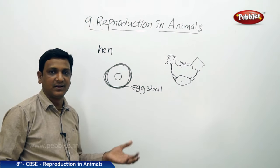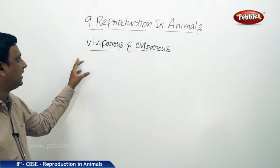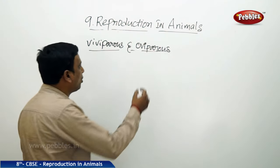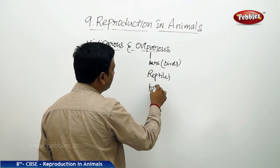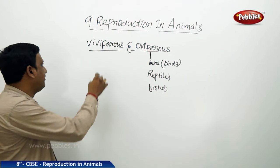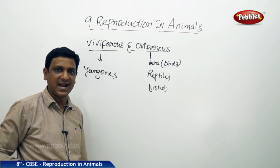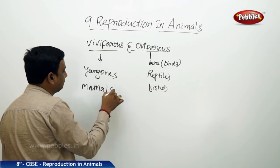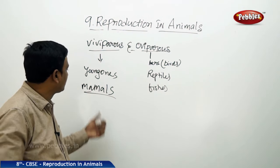We can classify animals depending on how they give birth to young ones. Animals that lay eggs are called oviparous — all birds, reptiles, and fishes are oviparous animals; they lay eggs and do not give birth to young ones directly. Viviparous animals give birth to completely developed young ones — dogs, cats, rats, humans, elephants, tigers — all mammals are viviparous. Mammals feed the young ones with their own milk; these are characteristic features of mammals.